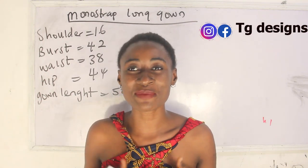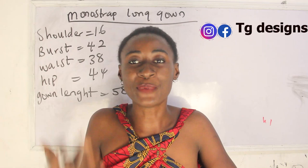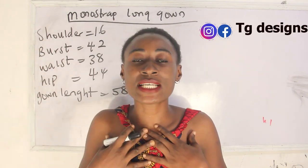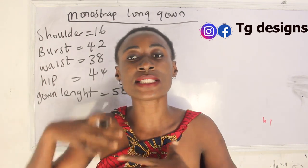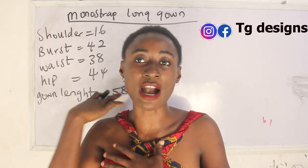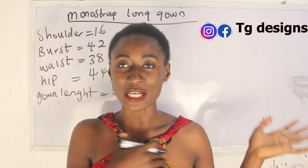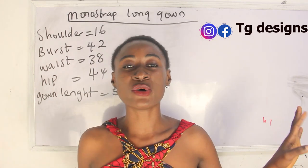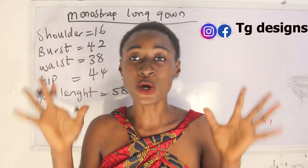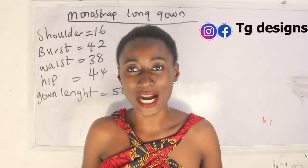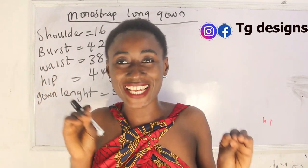In today's tutorial, we are going to make a simple video on how to cut and sew a monostripe bustier gown. Monostripe simply means that one part of your dress has your regular shoulder and the other part has your off-shoulder. I'm going to show you how to achieve your bustier and also how to have your long gown with a high slit at the back.